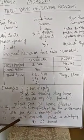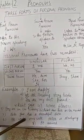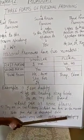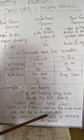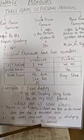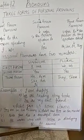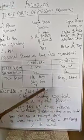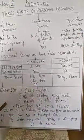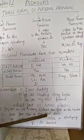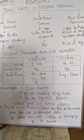He writes very well — he. She is studying — she. It reigned — it. So these personal pronouns are used in place of nouns.